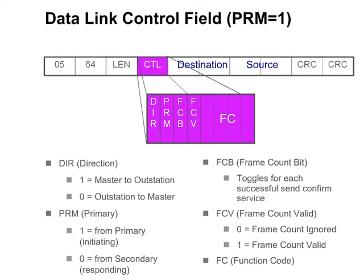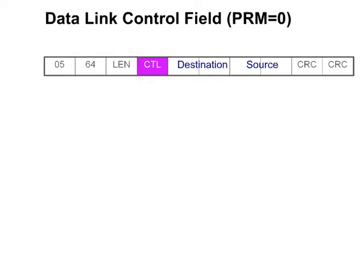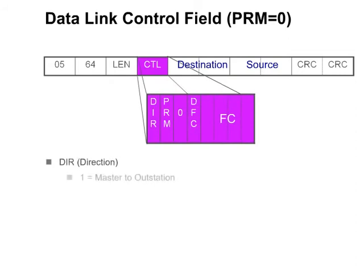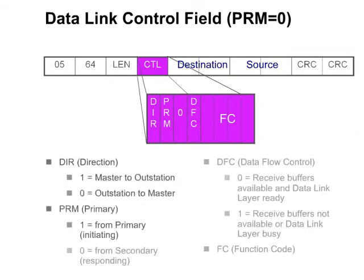The last four bits contain the function code, which will be explained later. If the direction bit is zero, the FCV and FCB bits are replaced by an unused bit and a data flow control bit.